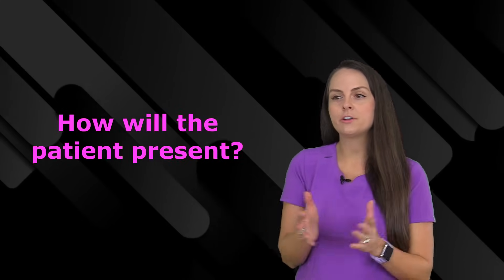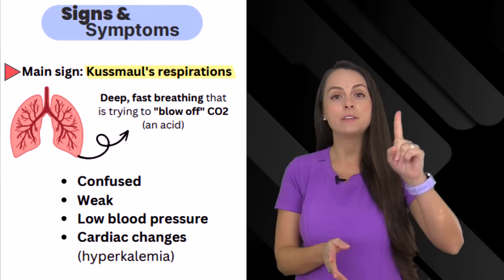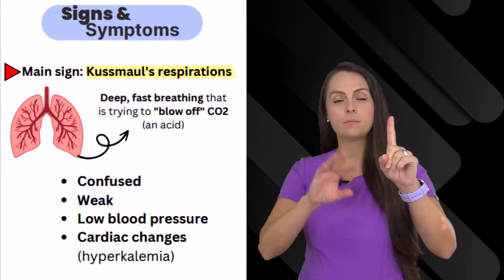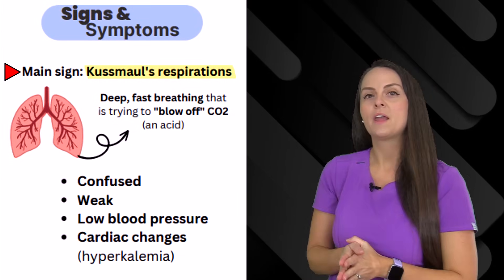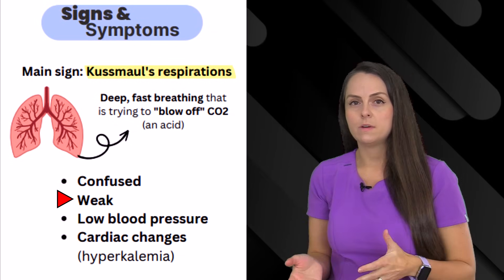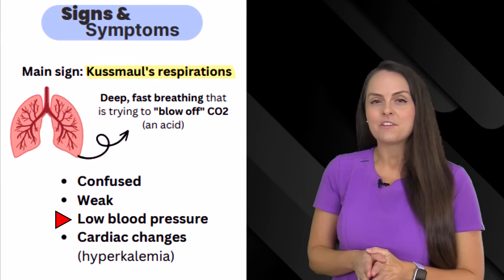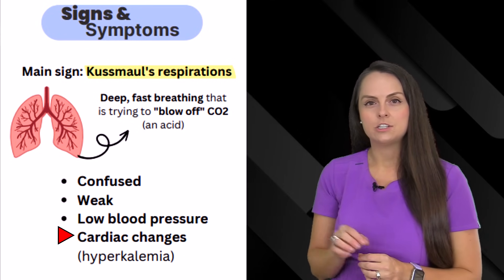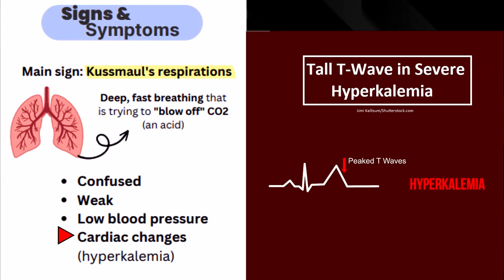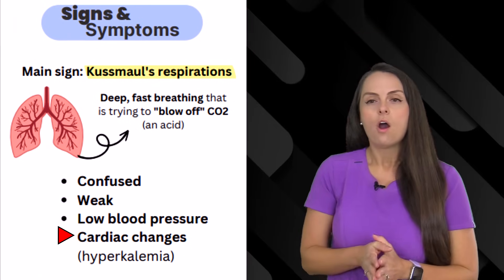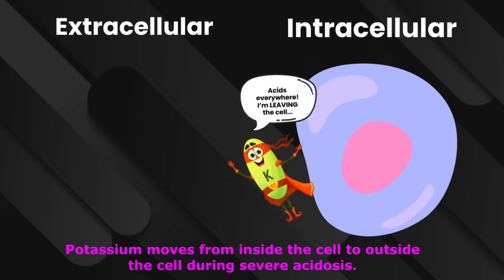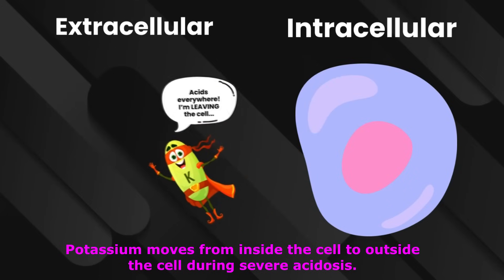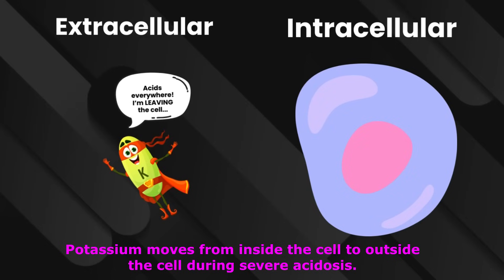When assessing a patient in metabolic acidosis, their breathing rate will be abnormal — they'll have Kussmaul breathing, which is fast and deep, to breathe off CO2. Neurologically, they're going to be confused and can be weak, and their blood pressure can be affected. You also want to look at their ECG — watch for abnormal T waves because they can present with hyperkalemia. With severe acidosis, potassium moves from inside the cell (intracellularly) to outside the cell (extracellularly), which elevates potassium levels.